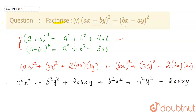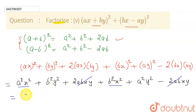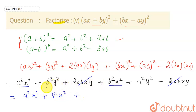Now, as you can see, the plus 2abxy and minus 2abxy will cancel. So let's write the remaining terms: the x squared terms give a squared x squared plus b squared x squared, and the y squared terms give b squared y squared plus a squared y squared.